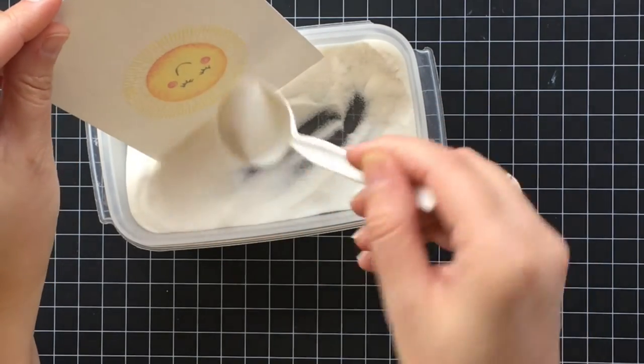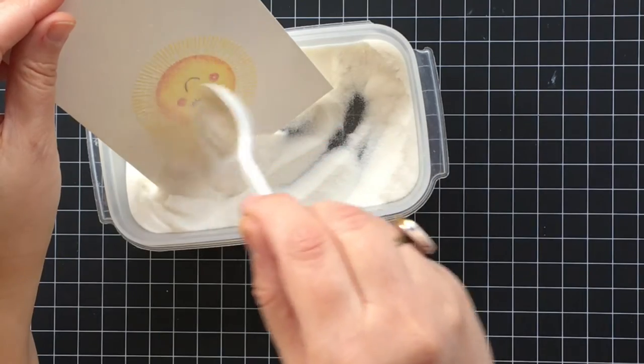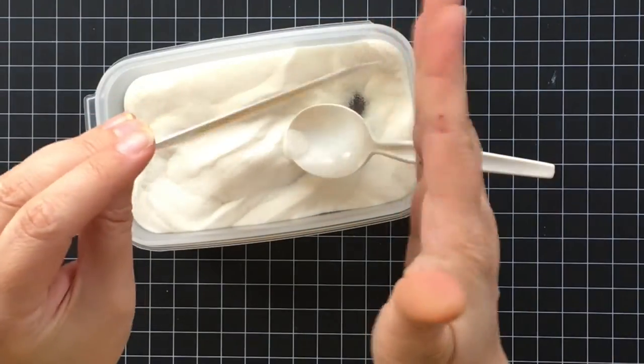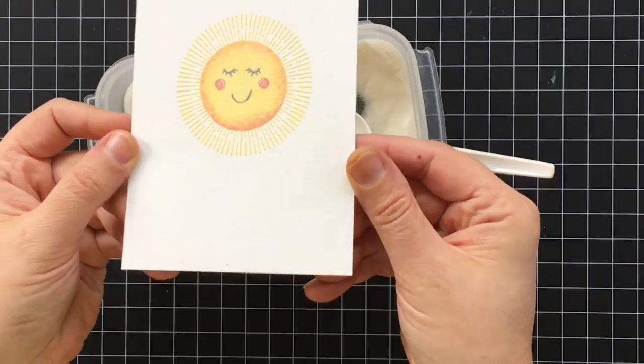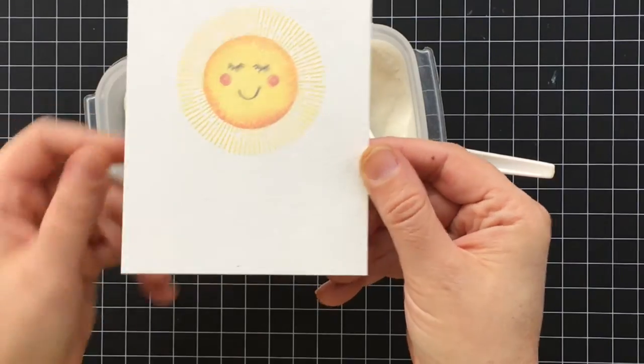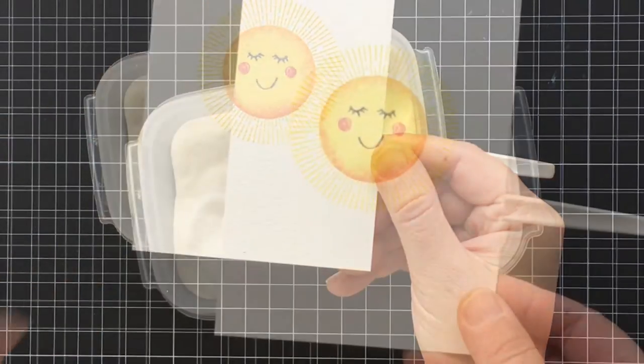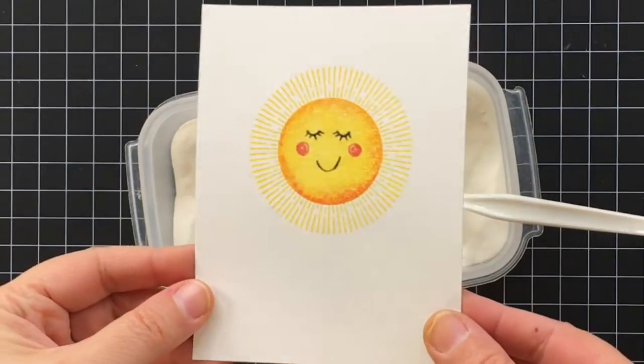I'm just putting on tons and tons of the embossing powder so I make sure I get it all covered, and then I'll go ahead and heat set this with an embossing tool.